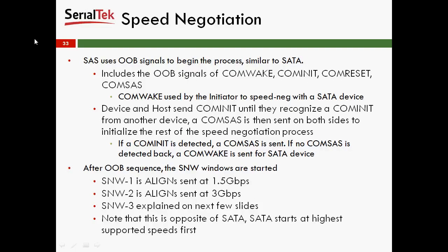For speed negotiation, SAS uses OOB, or out-of-band, signals to begin the process, similar to Serial ATA. It includes the OOB signals of COM-Wake, COM-Init, COM-Reset, and also a new one: COM-SAS. COM-Wake is used by the initiator to speed negotiate with the SATA device. The device and host send COM-Inits until they recognize COM-Inits from another device, and then a COM-SAS is sent on both sides to initialize the rest of the speed negotiation process.